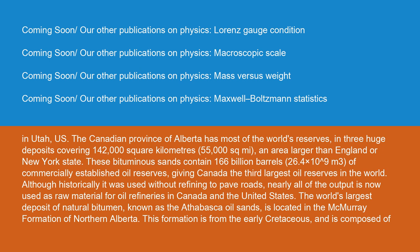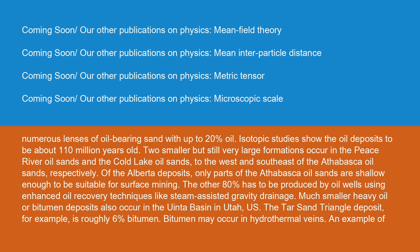Although historically it was used without refining to pave roads, nearly all of the output is now used as raw material for oil refineries in Canada and the United States. The world's largest deposit of natural bitumen, known as the Athabasca oil sands, is located in the McMurray Formation of northern Alberta. This formation is from the early Cretaceous and is composed of numerous lenses of oil-bearing sand with up to 20% oil. Isotopic studies show the oil deposits to be about 110 million years old. Of the Alberta deposits, only parts of the Athabasca oil sands are shallow enough to be suitable for surface mining. The other 80% has to be produced by oil wells using enhanced oil recovery techniques like steam-assisted gravity drainage.